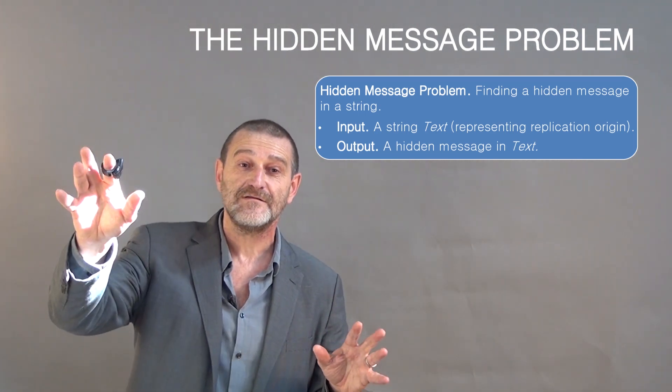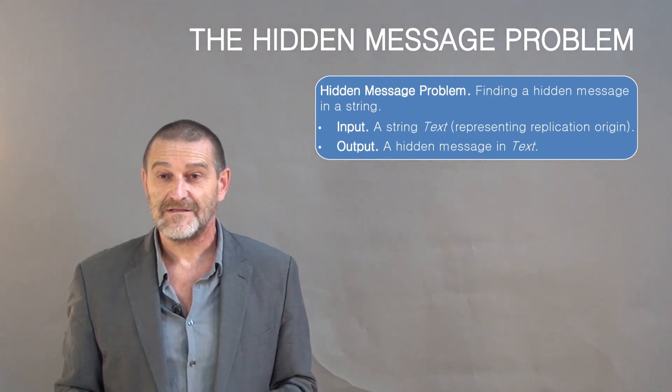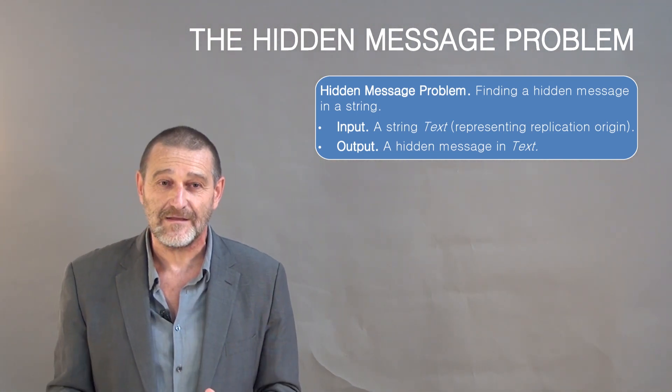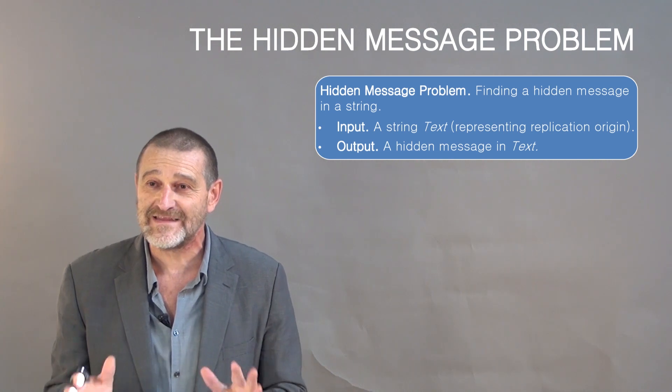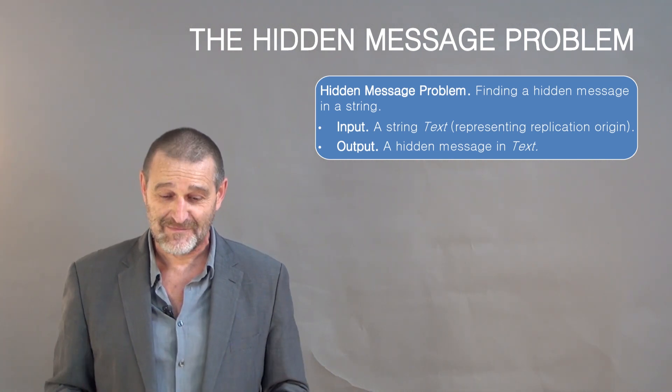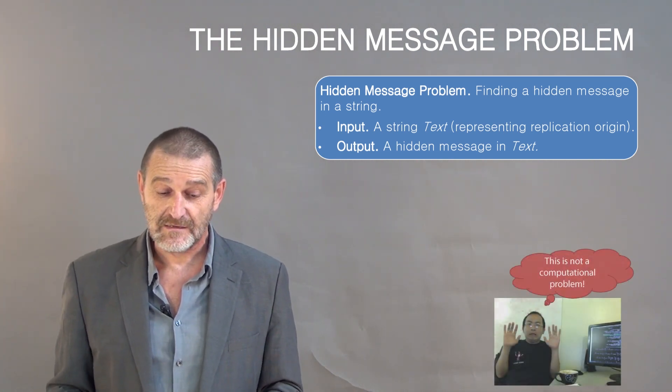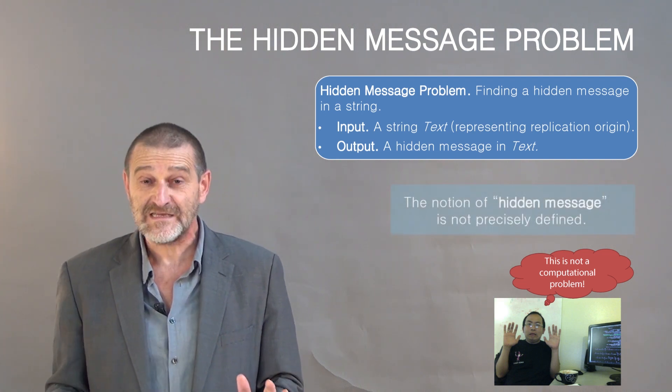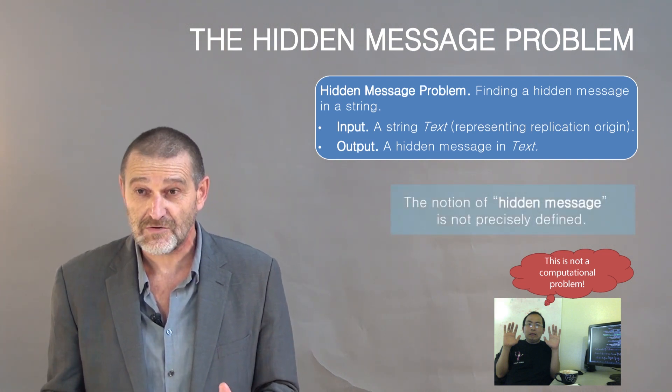This problem is absolutely unclear. It is equally poorly defined as the first problem I showed you. Indeed, Sean is not happy again because what is the hidden message? Have I described it? No.